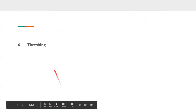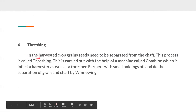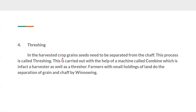The fourth question is threshing. In the harvested crop, the grain seeds need to be separated from the chaff. This process is called threshing. It is carried out with the help of a machine called a combine, which is in fact both a harvester and a thresher. The combine does the work of cutting the crop and also separating the grains.